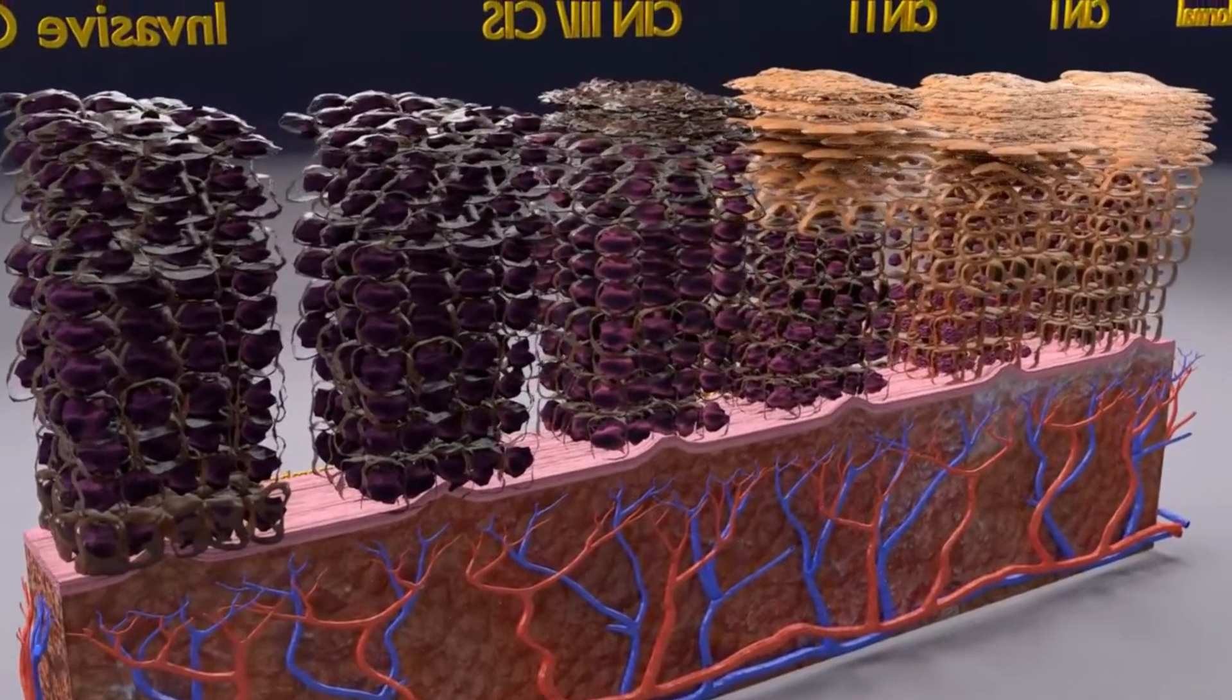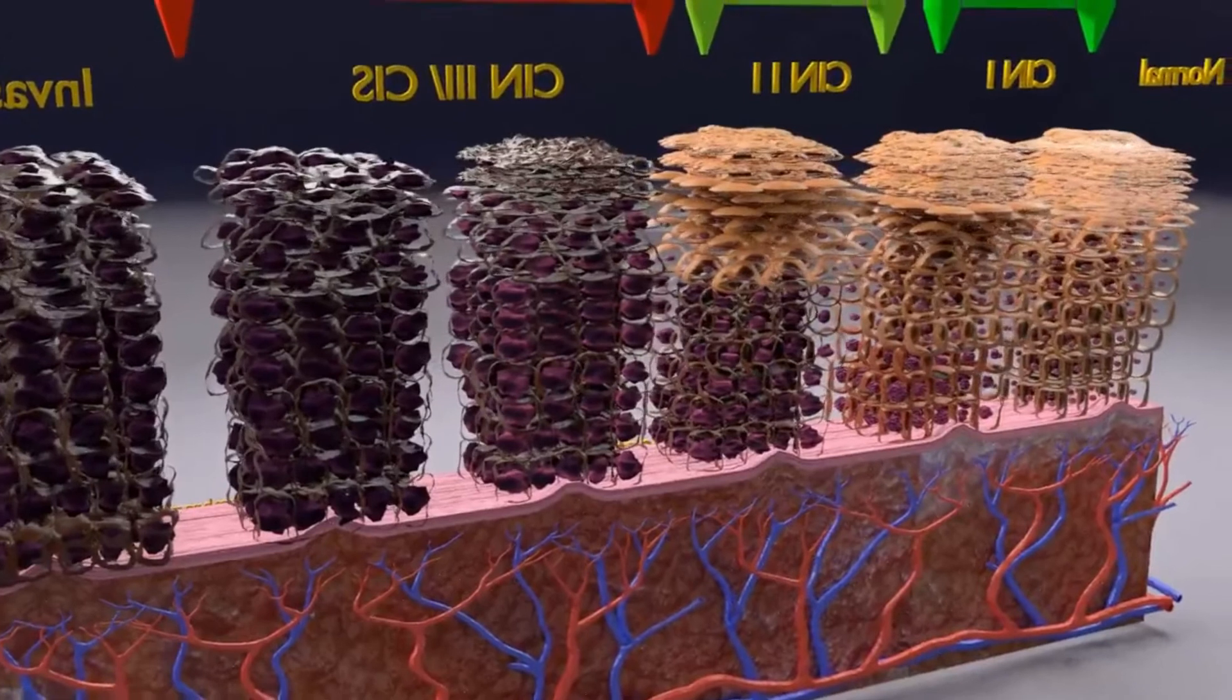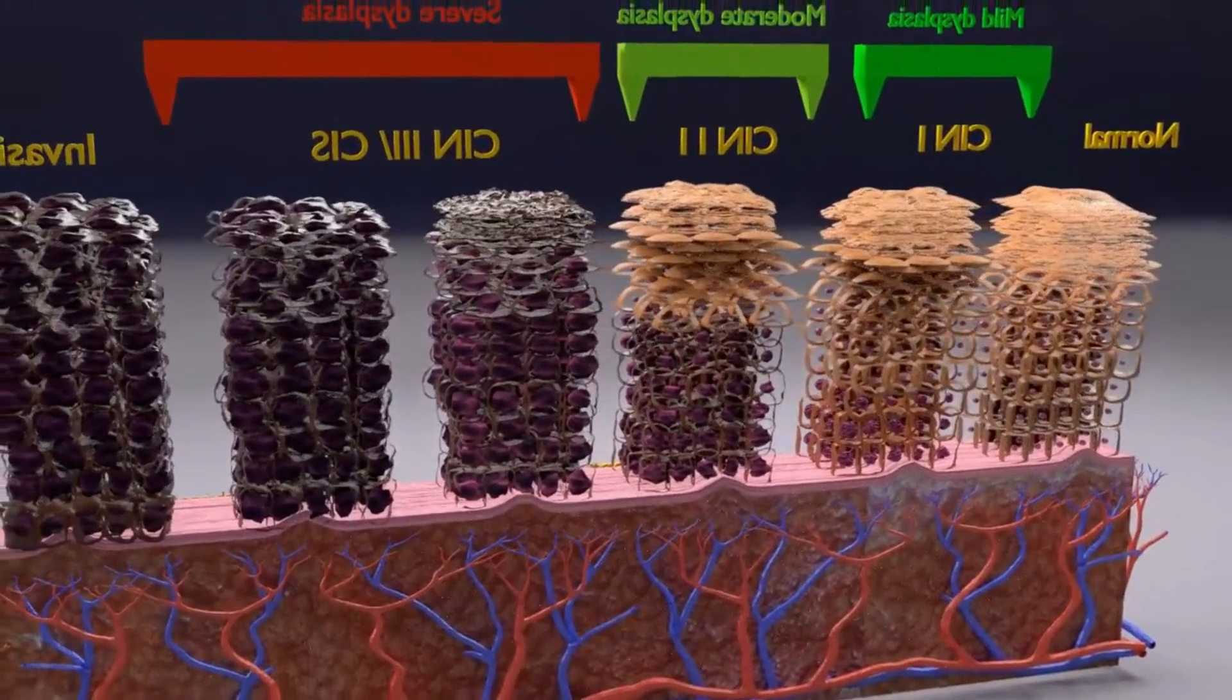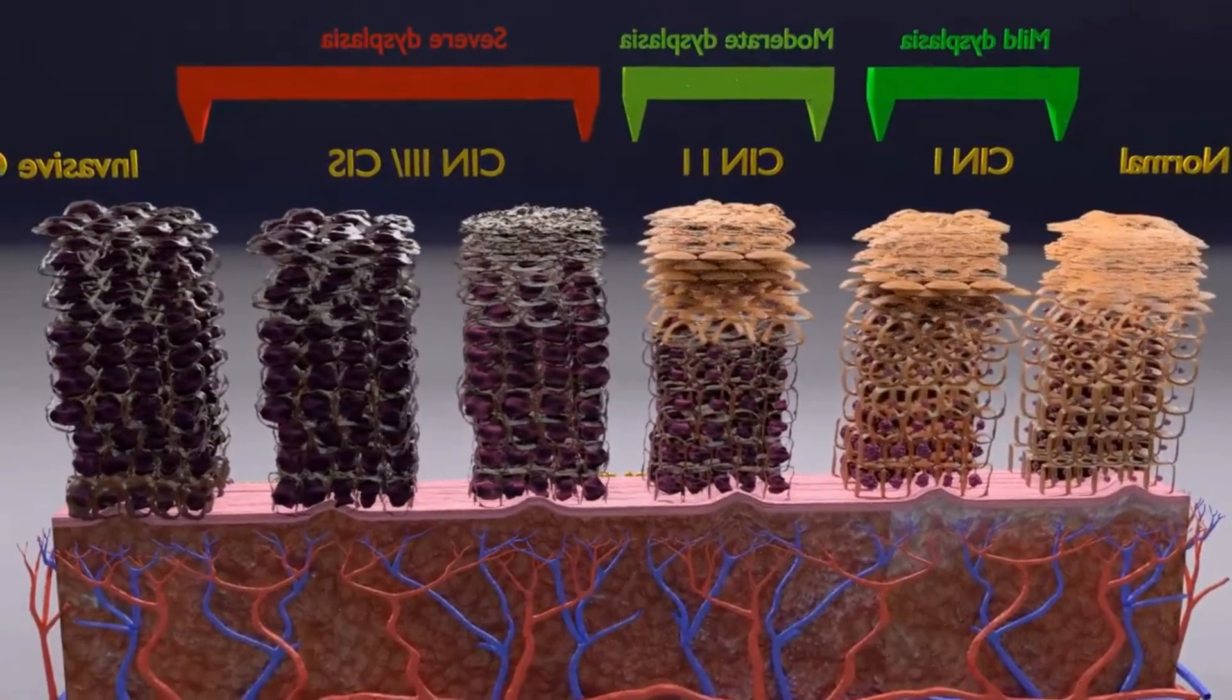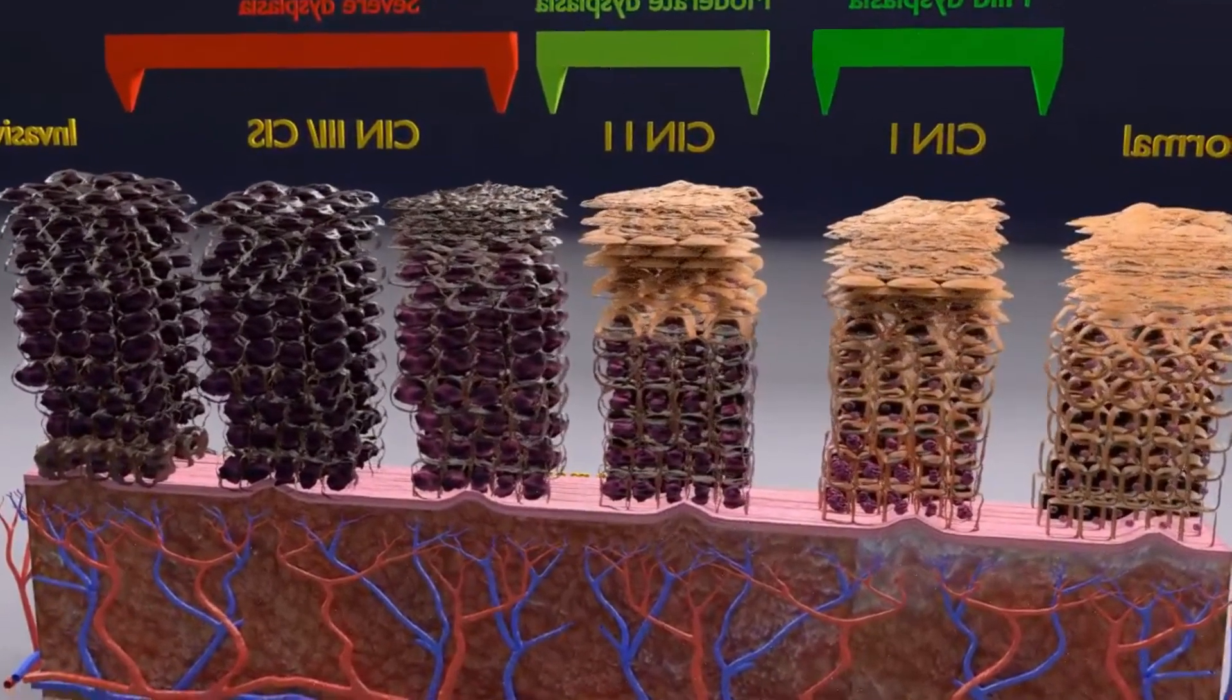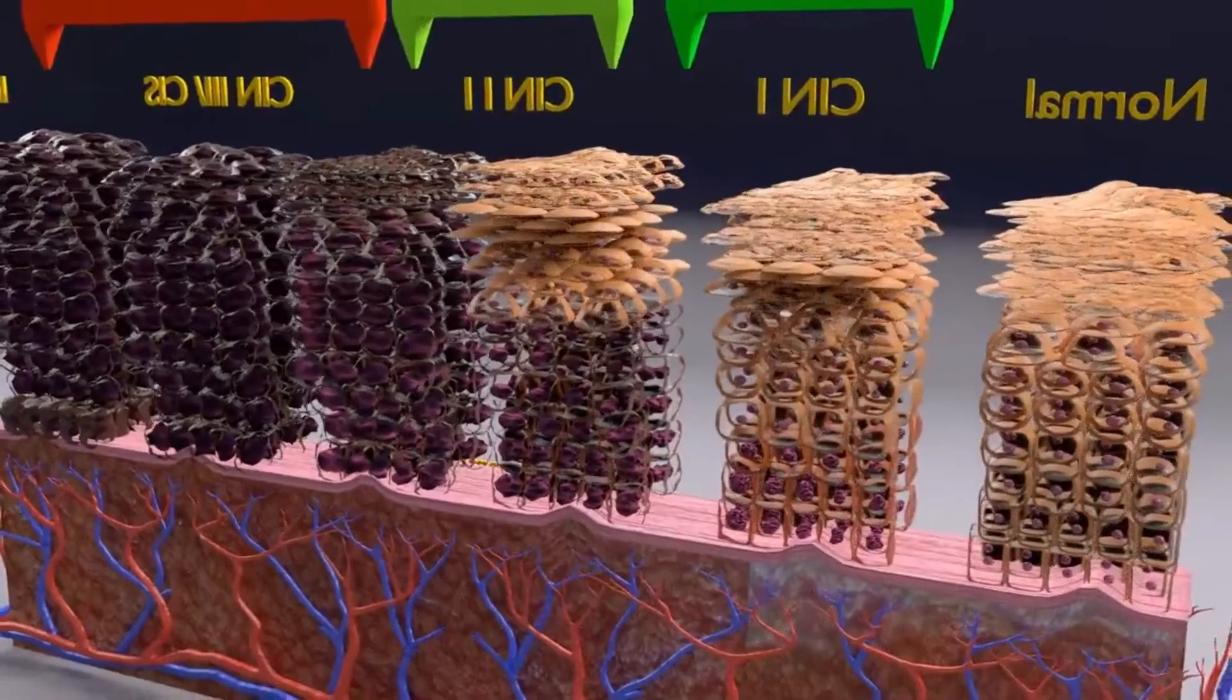About 75% of CIN1 will regress within 1 year. 90% will regress within 2 years. About 50% of CIN2 cases will regress within 2 years without treatment. HPV vaccination is the only approach for primary prevention of both CIN and cervical cancer.